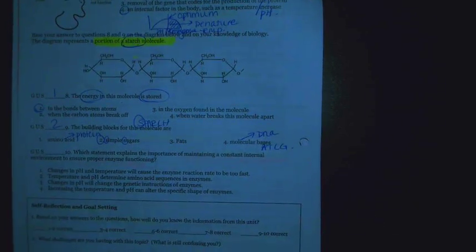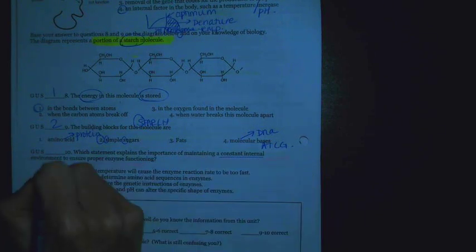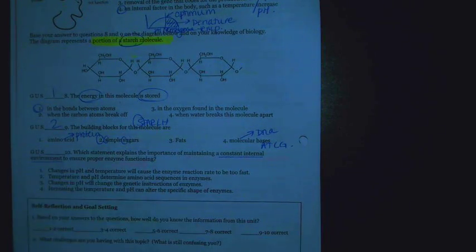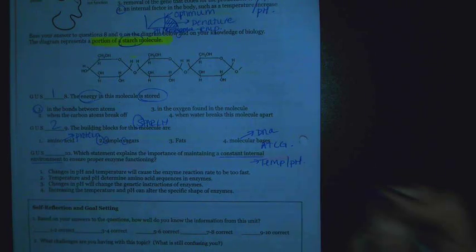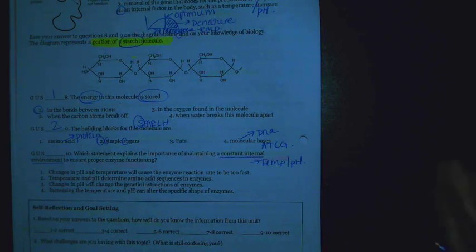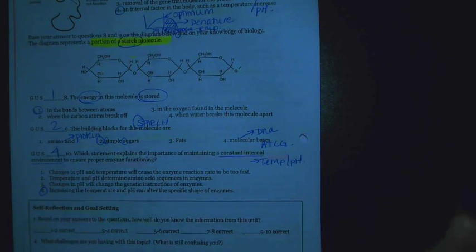And then that final question says, which statement explains the importance of maintaining a constant internal environment to ensure proper enzyme functioning? So internal environment includes things like temperature and also things like pH. Remember, you don't want to change the temperature or pH because if you do, you could potentially change the shape of the enzyme. And if you change the shape of the enzyme, then you're going to change the function of it. Best answer choice there is going to be 4. Increasing the temperature and pH can alter the specific shape of enzymes.